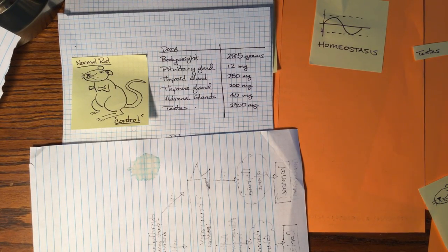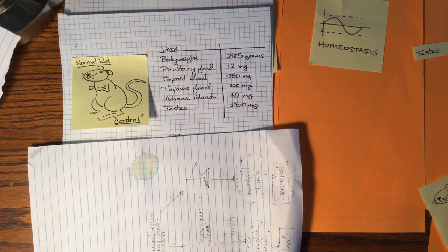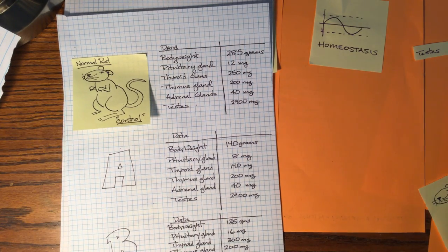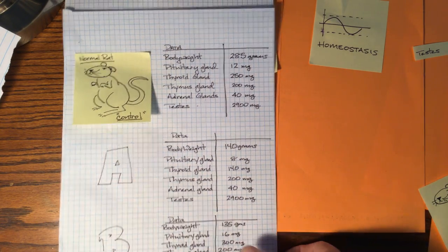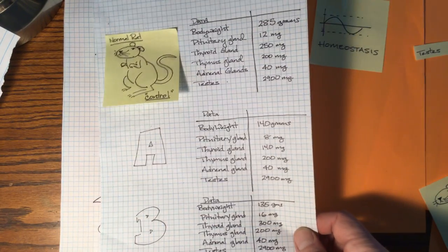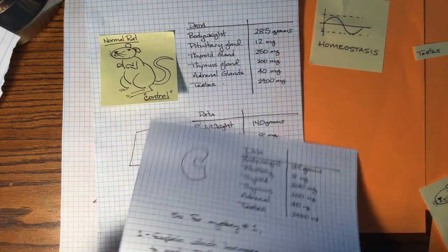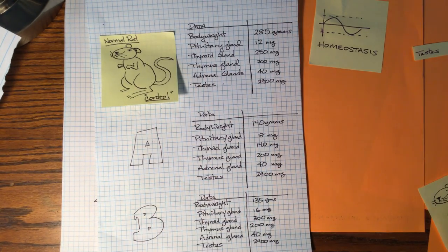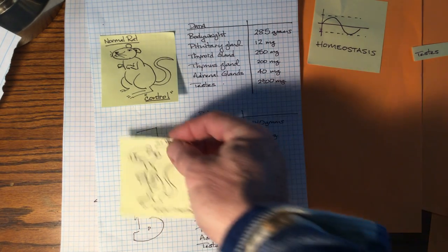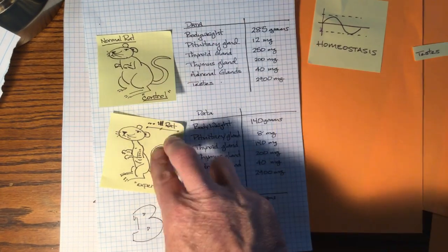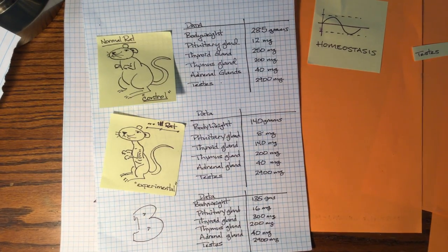What you guys are going to do is you're going to be given autopsies of three rats. Here are the three rats. There's rat A, there's rat B, and of course there's rat C somewhere around here on my papers. Here's rat C. Now, all three rats ended up dying looking like this.